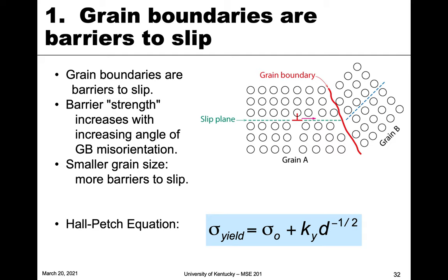Looking at the first strategy, grain size reduction: grain boundaries are barriers to slip. If we have a grain with an edge dislocation — an extra half plane — moving on a slip plane in a slip direction, it keeps moving to the right. However, at that point the grain ends and a new grain B begins at a specific angle to grain A. A comparable plane and direction would be the blue dashed line rather than the green dashed line. For slip to continue across the boundary, it must realign with the direction and plane in grain B, creating a barrier that requires more applied force.